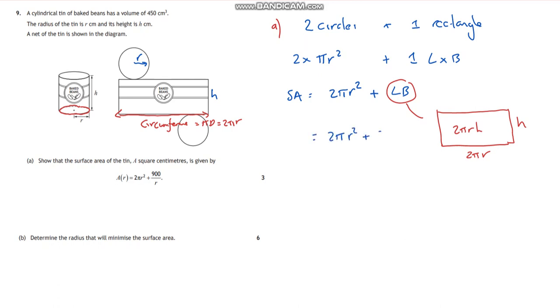So 2 pi r squared plus 2 pi r h. So very, very close. I just want to kind of get rid of this 2 pi and the h value, really. So what else do I know? I know the volume is 450. So the volume of this tin is equal to 450.